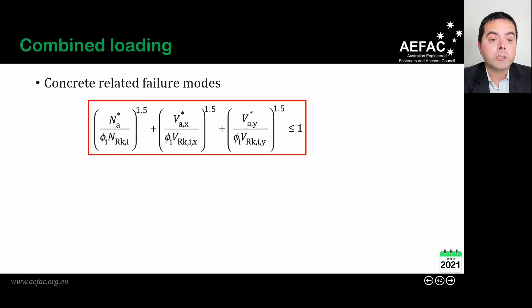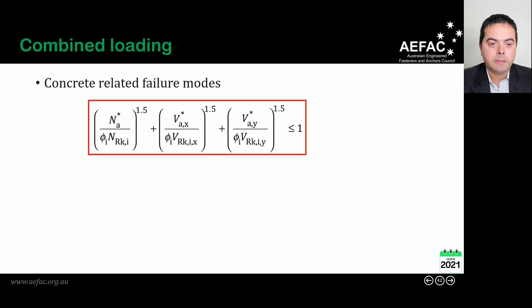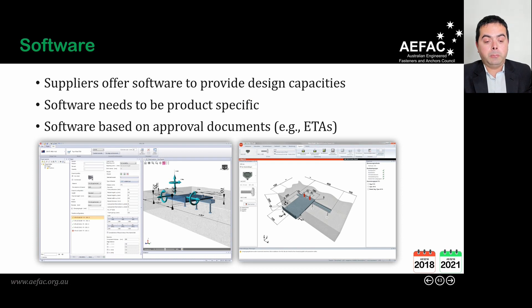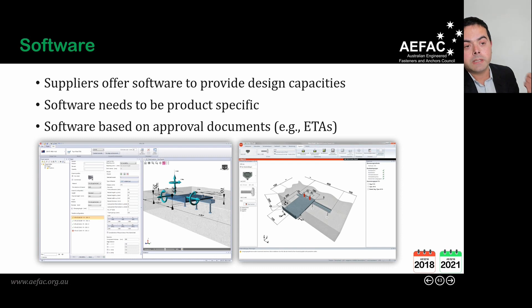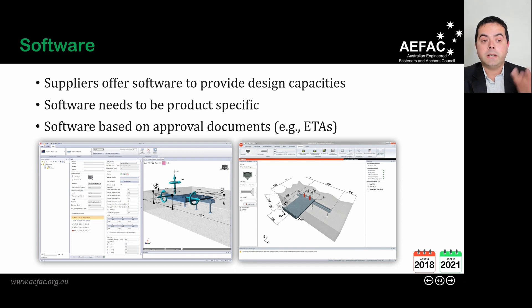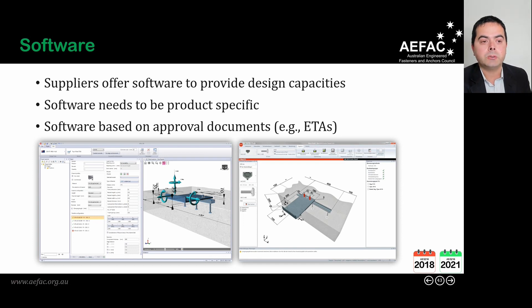For concrete-related failure modes not covered in the steel failure slide, a separate verification method is used for those directions. In total, to design an anchor channel for single loading, you need to calculate 10 tensile capacities, 9 shear capacities in the X direction, and 9 shear capacities in the Y direction — 28 capacities in total. For multiple loading conditions, the principle of superposition may be needed, making the design process quite complex.